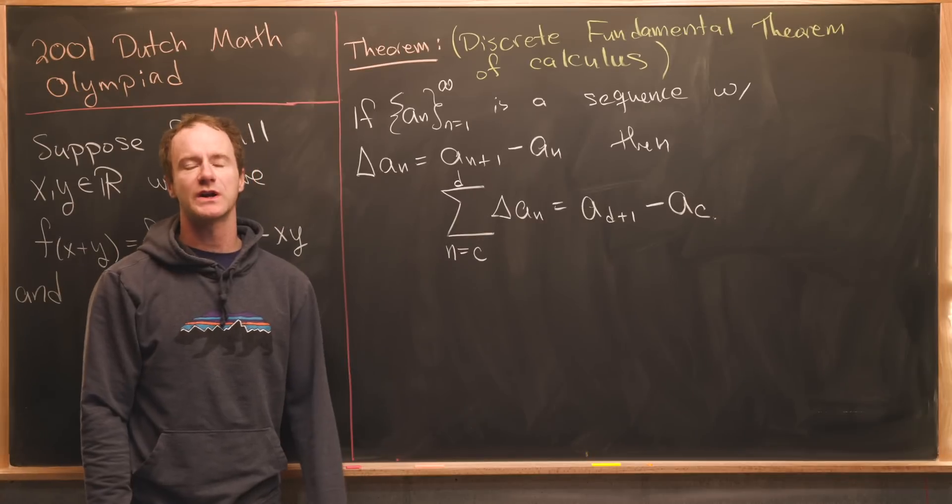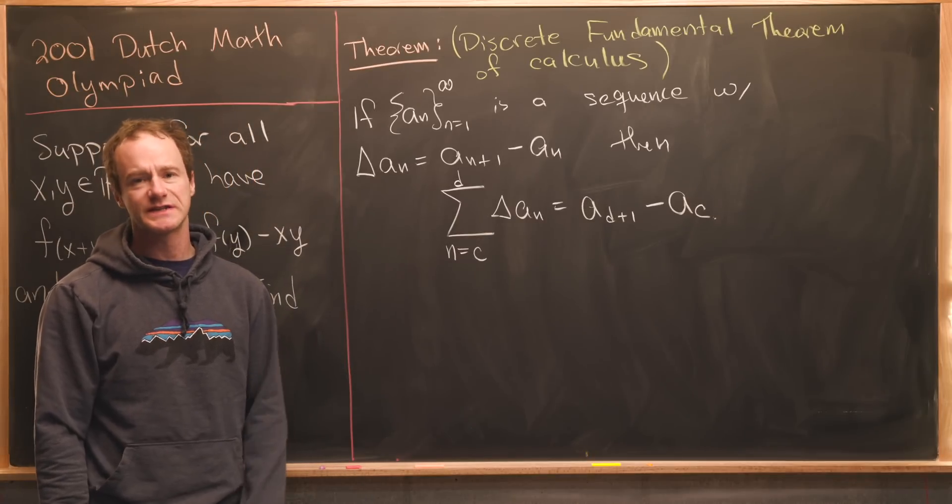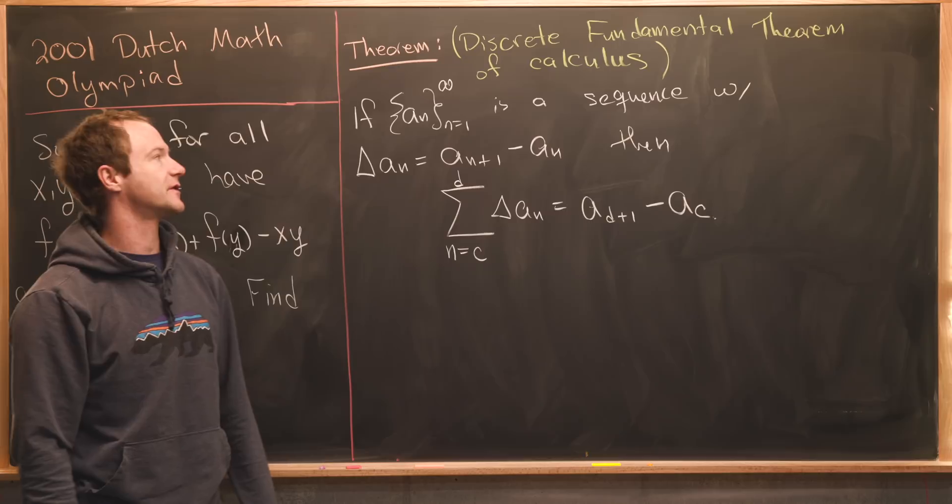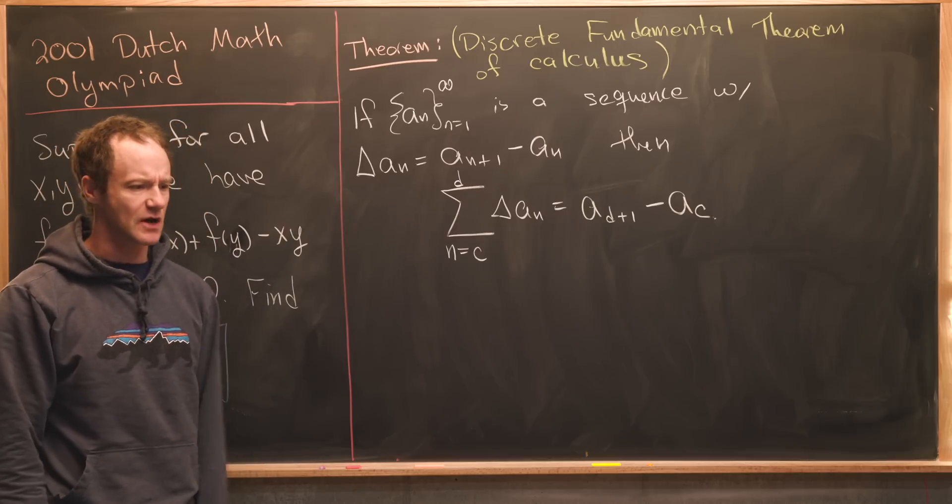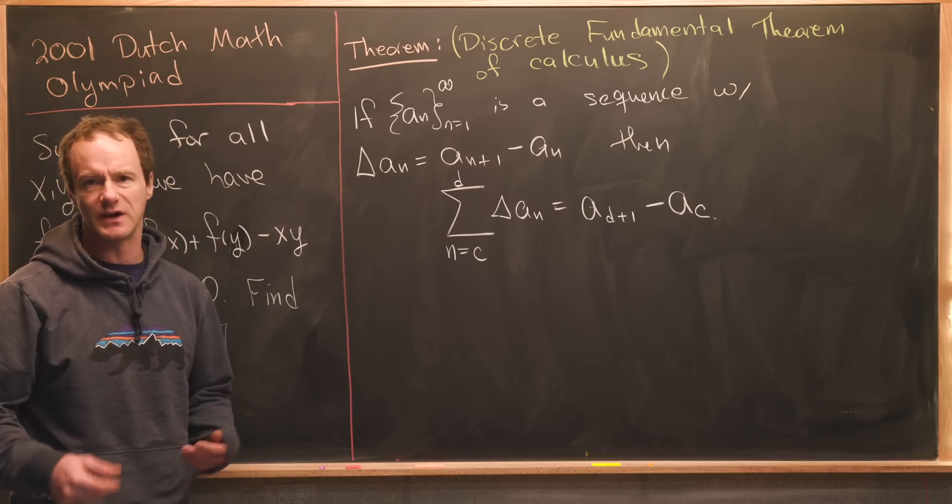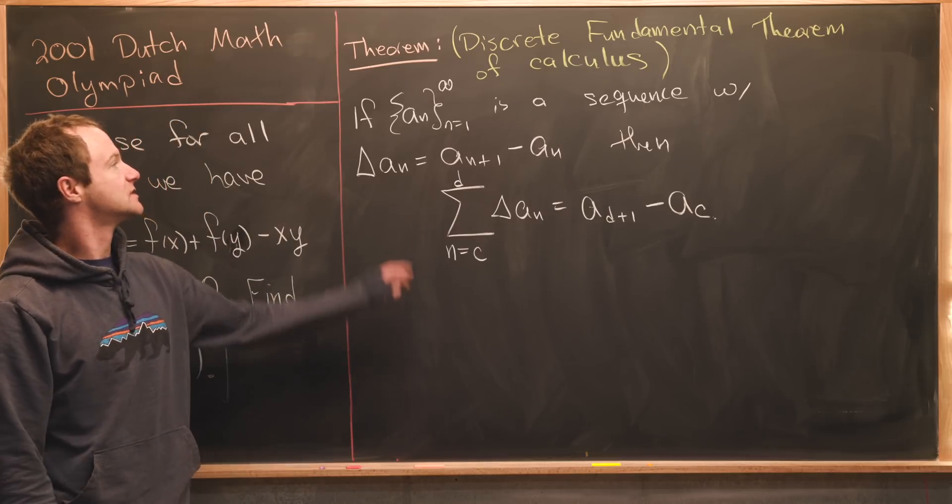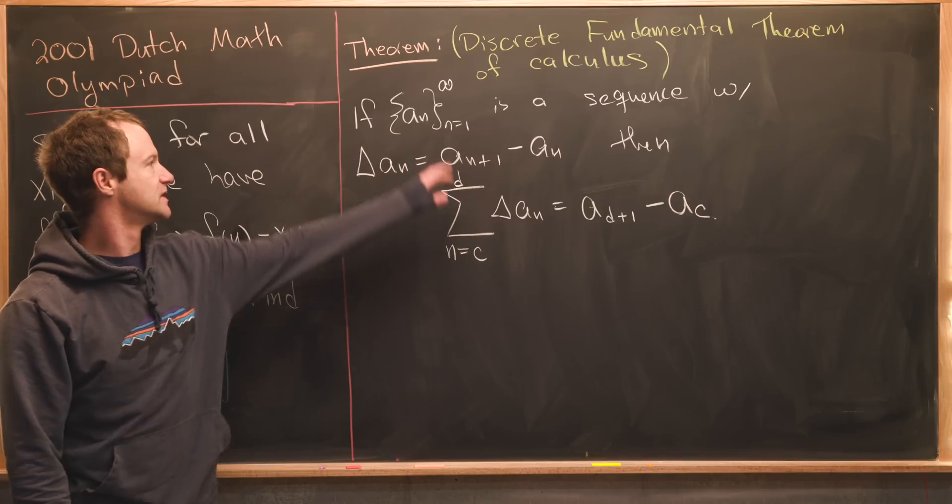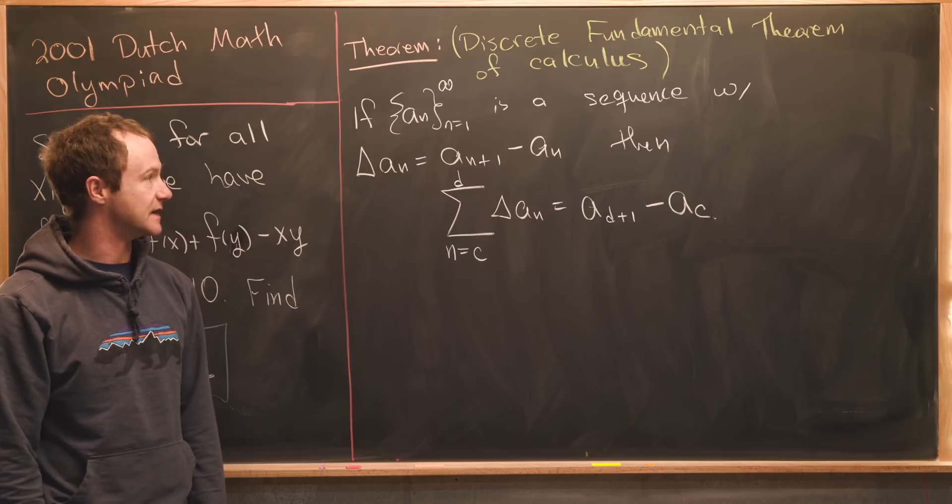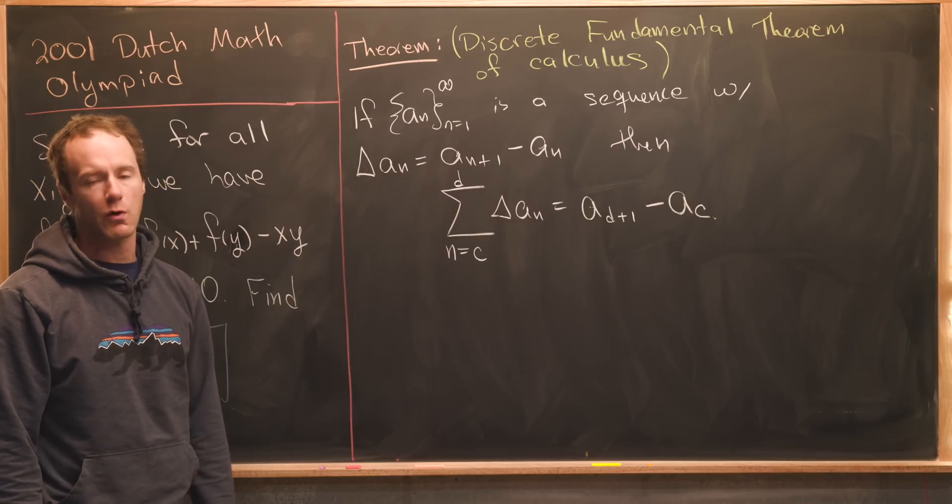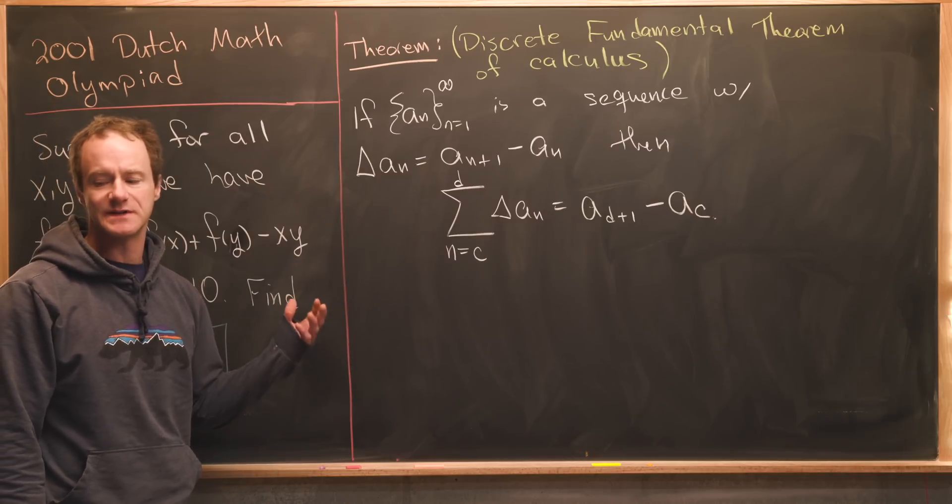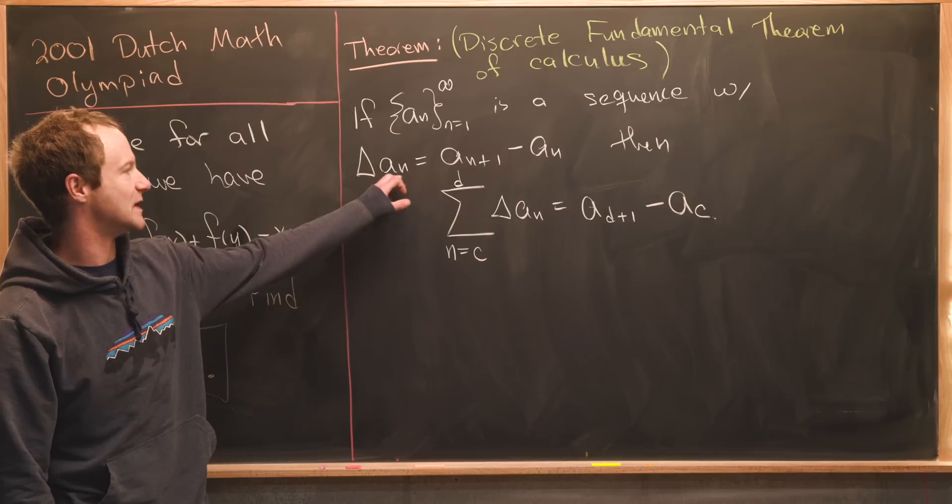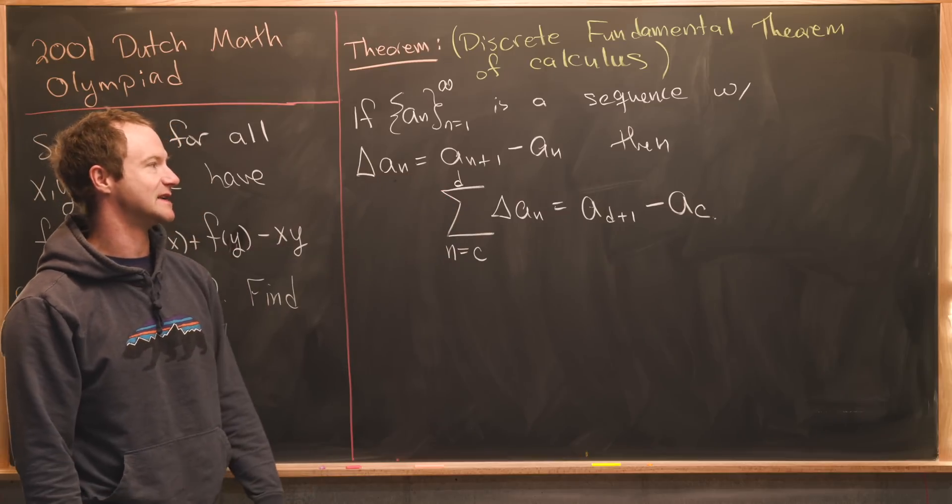Like I said before, we're going to use a not very well known but pretty simple theorem in order to prove this quickly. It's called the discrete fundamental theorem of calculus. I've actually done a really old video on this theorem if you want to dig that up. So it says that if a sub n is a sequence of numbers, so n goes from one to infinity, and then we define this thing called the forward difference operator or sometimes the discrete derivative, denoted by delta a sub n, that's a sub n plus one minus a sub n.